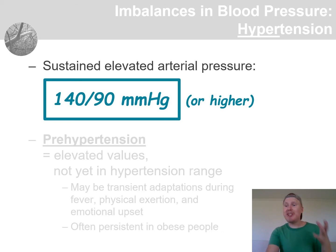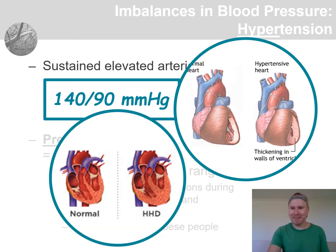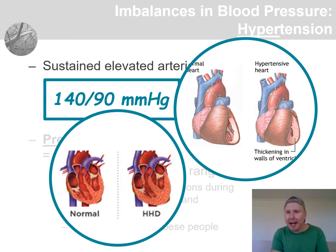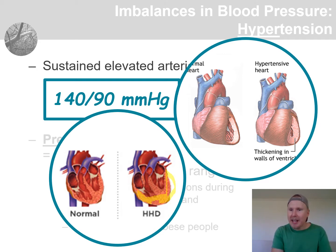Hypertension also results in anatomical changes in the heart. On hypertension patients, the heart muscle ends up having to work harder, and the myocardium becomes larger in size, functioning weaker, and also flabby.